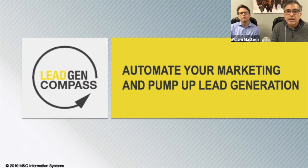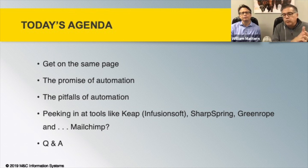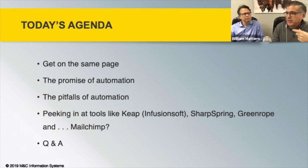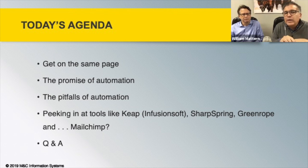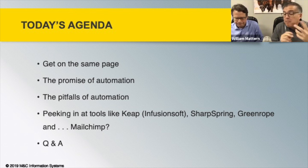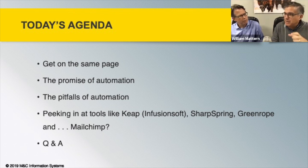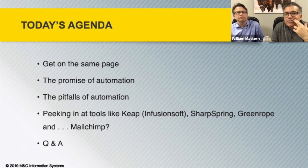Today's topic is 'Automate Your Marketing and Lead Generation.' We're going to get on the same page about what marketing automation means, talk about the promise of it — because a lot of people are telling you it'll change your business — share what actually happens from experience, discuss the pitfalls, and peek at some tools like Keep (formerly Infusionsoft), SharpSpring, GreenRope, and Mailchimp. Then we'll have an open Q&A.